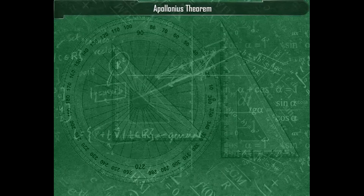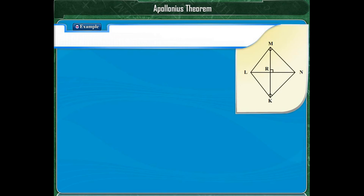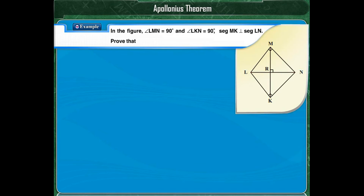It is time to practice what we have studied so far. We will try to solve a few problems. In the figure shown here, angle LMN is equal to 90 degrees and angle LKN is also equal to 90 degrees. Segment MK is perpendicular to segment LN. Prove that R is the midpoint of segment MK.